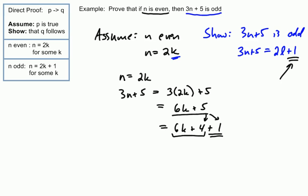You can also notice that the 6K plus 4 does have a factor of 2. We don't need the greatest common factor. Again, our goal is to try to match this end rule, which is why I think it really helps to have the 3N plus 5 equals 2L plus 1 written down on paper so you can help get to that final destination.